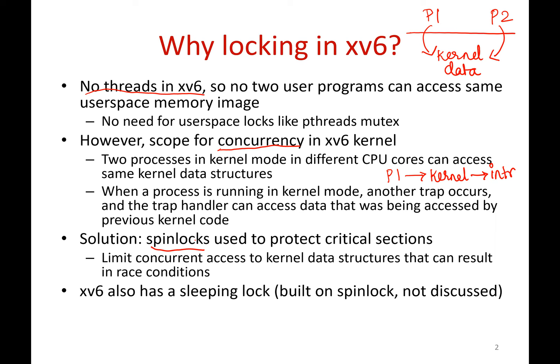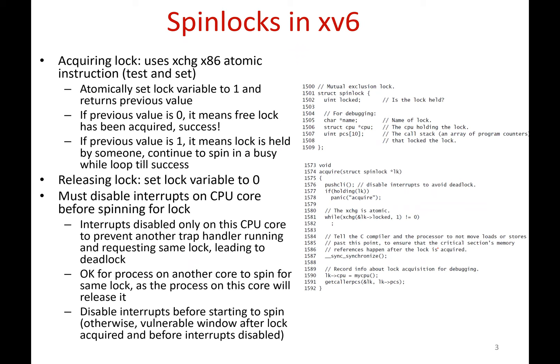xv6 also has a sleeping lock, which is another abstraction built on top of the spin lock, but we are not going to discuss that in this lecture. In this lecture, we are going to understand how spin locks work in xv6. This is the spin lock structure — there is basically a variable `locked` that indicates whether the spin lock is held or not, and there is some information for debugging.